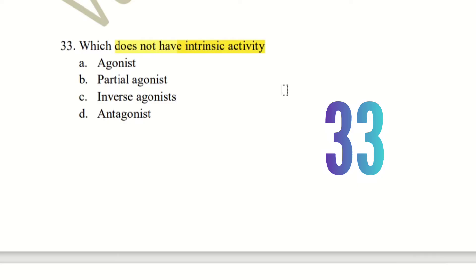The choices are agonist, partial agonist, inverse agonist, and antagonist. A partial agonist has a little bit of intrinsic activity. An antagonist has no intrinsic activity of its own — it is the same baseline activity. If there is an agonist present, you can use antagonist activity to block it.